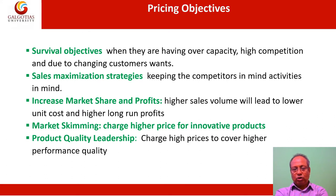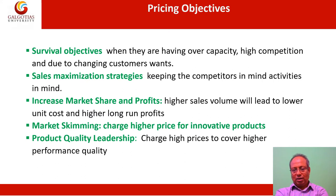Companies also adopt market skimming strategies, where they charge higher prices for their innovative products. Sony skimmed the price for 3D television initially. Apple charged a higher price for its iPod because at that point in time such products were not available. Some companies also adopt product quality leadership as their objective — they charge higher prices to cover higher performance and quality. Starbucks, Taj Group of Hotels, Hilton, etc. follow this strategy.